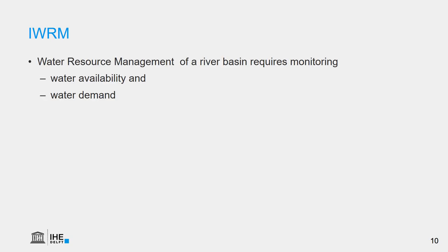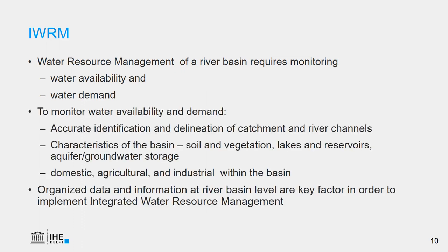Water resources management of a river basin requires monitoring water availability and water demand. These depend on hydrology and ecology and are significantly influenced by weather and climate. Integrated water resource management requires accurate identification and delineation of catchments and river channels based on terrain and slope. It requires characteristics of the basin such as soil, vegetation, lakes and reservoirs, and groundwater storage. It also requires information about domestic, agricultural, and industrial water demand within the basin. Therefore, organized data and information at river basin level are key factors for implementing integrated water resources management.